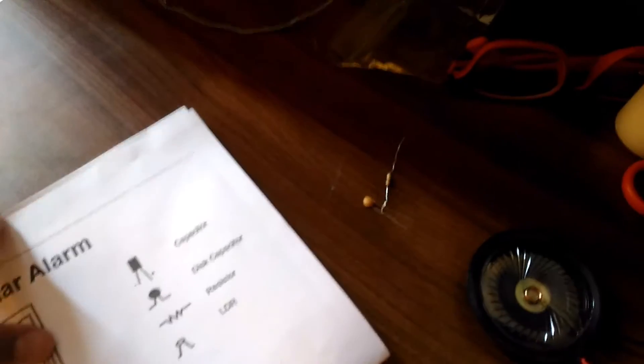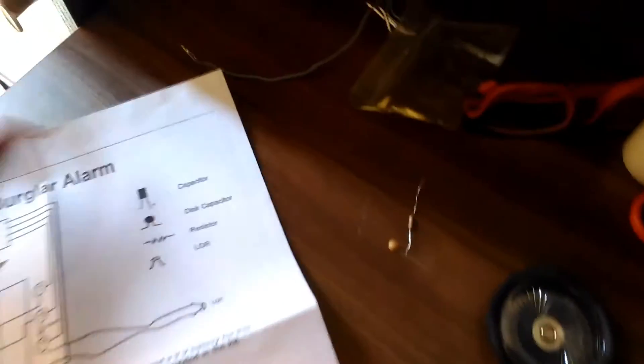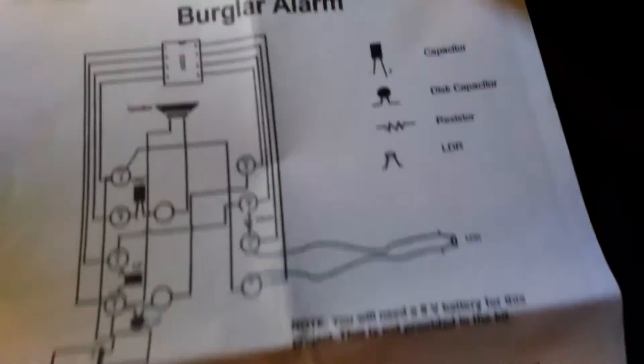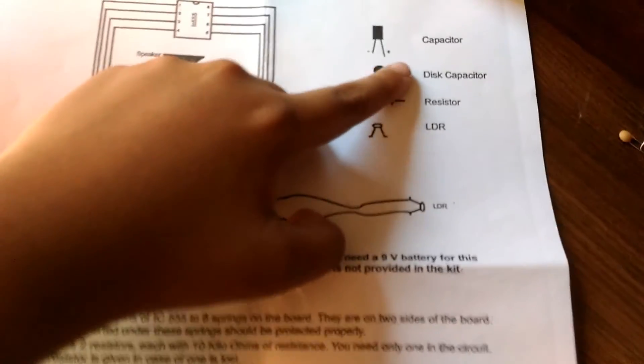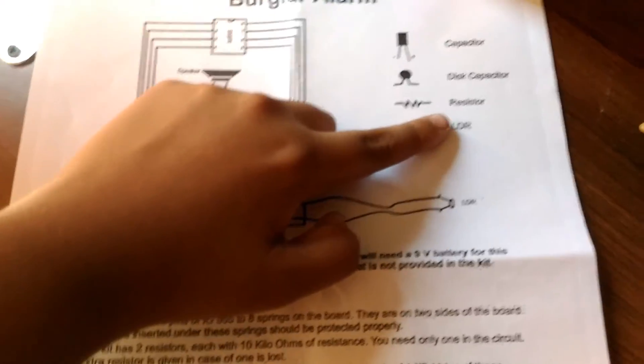I will give you more information about this. So these are the rules. I will tell you how to create it. This is the diagram which I will tell you. Talking about the symbols. So there's a capacitor, disc capacitor, resistor, and an LDR. Bye bye. Thank you.